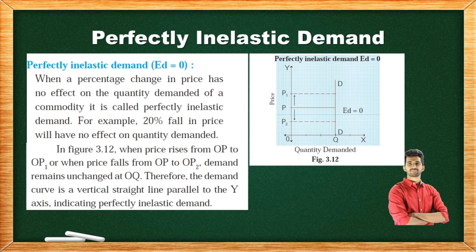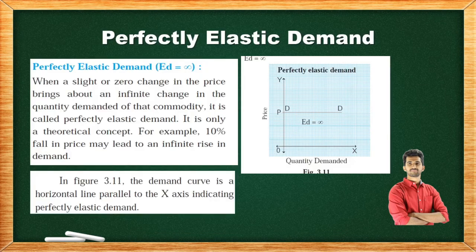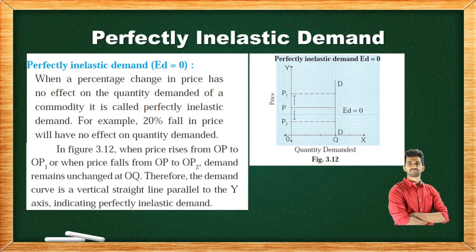To recap: there are five types — Perfectly Elastic Demand, Perfectly Inelastic Demand, Unitary Elastic Demand, Relatively Elastic Demand, and Relatively Inelastic. Perfectly Elastic means infinite change, and Perfectly Inelastic means no change or no effect.